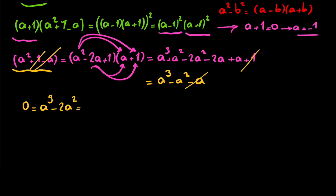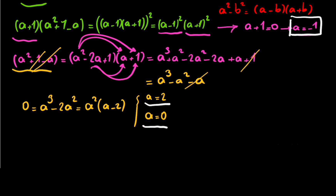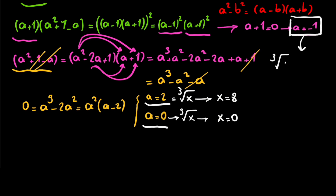Factoring, we get a squared times a minus 2 equals 0. So we have two situations: a equals 2 and a equals 0. Combined with the earlier solution, we have three answers for a: a equals negative 1, a equals 2, and a equals 0. Since a equals cube root of x, for a equals 2, x equals 8; for a equals 0, x equals 0; and for a equals negative 1, x equals negative 1.